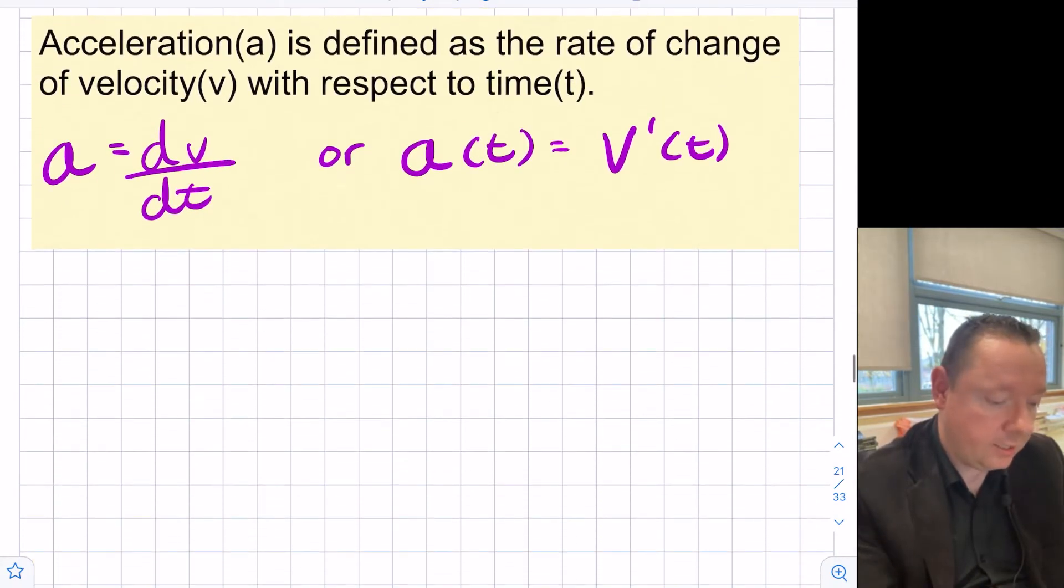Same with acceleration. Acceleration we define as the rate of change of velocity with respect to how velocity changes over time. So acceleration must be dv by dt, or a of t is v dash of t. And we can do some examples where we need to work out velocity or we need to work out acceleration. And you'll need to know that that means to differentiate because it's to find the rate of change.